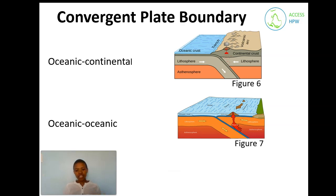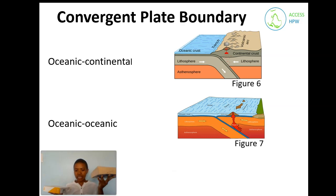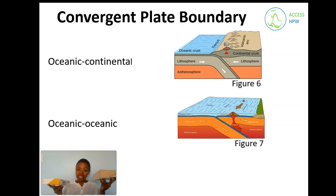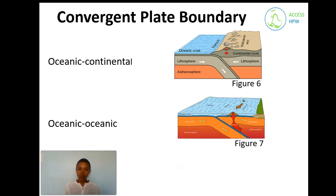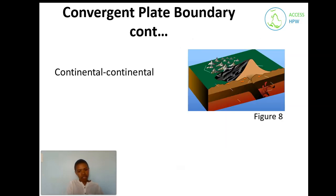The second type, shown in figure seven, is oceanic-oceanic convergence — when two oceanic crusts move towards each other. There will still be one that is denser and cooler than the other, so the denser one sinks beneath the less dense one. When that sinking occurs, the magma finds a way to escape, and that is how volcanic eruptions occur.